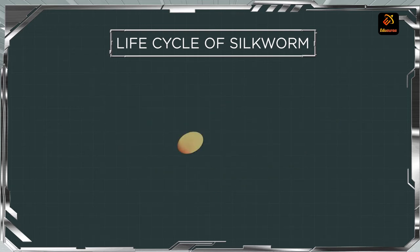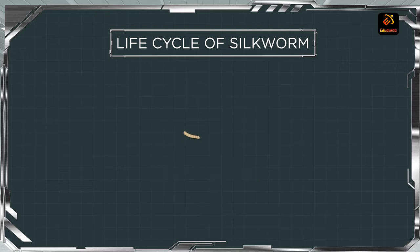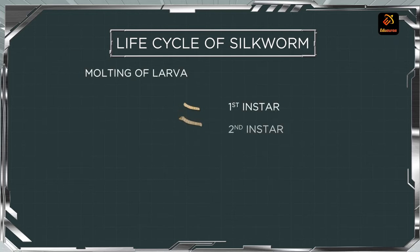Once the egg is hatched, the first stage of that worm comes out — what is that stage called? Caterpillar larvae. The caterpillar larvae will come out and now this caterpillar larvae is going to undergo certain changes called molting. The caterpillar larvae undergoes molting four times.